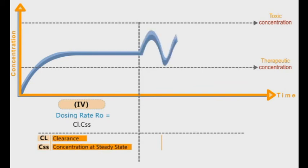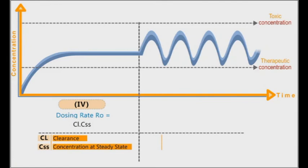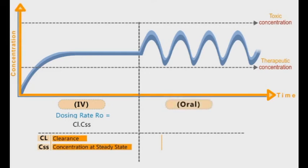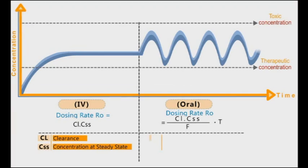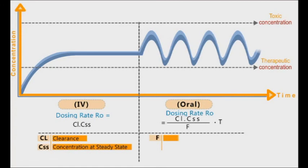However, there are additional factors that affect the dosing rate for orally administered drugs. These factors are the bioavailability and the time interval of oral dosing. Thus, the dosing rate for oral administration is equal to the clearance multiplied by the concentration at steady state, and this is similar to IV infusion. Then it is divided by the oral bioavailability and multiplied by the time interval.